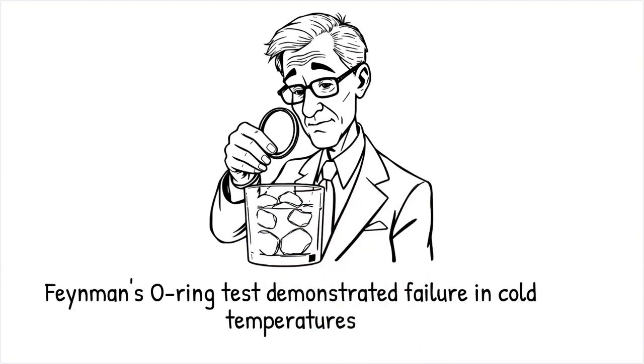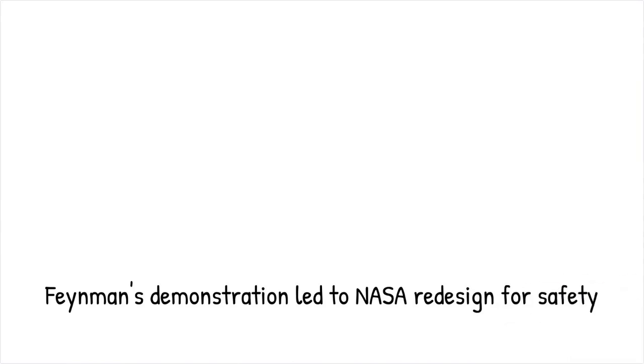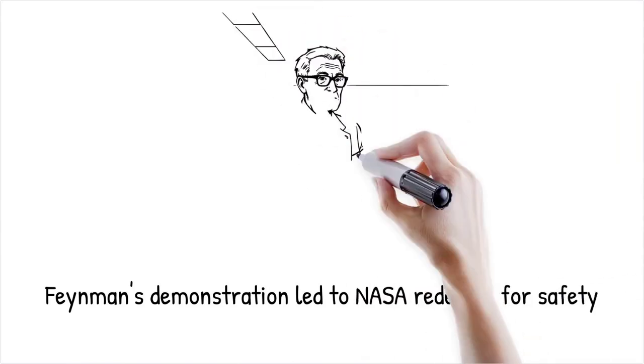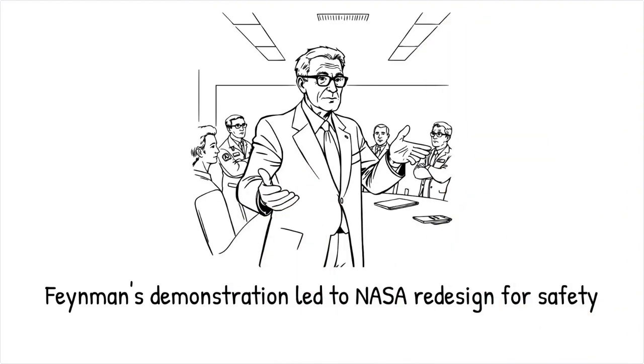His report criticized bureaucratic failures and risk miscalculations, emphasizing the importance of scientific integrity in engineering. His direct physical demonstration of O-ring failure led NASA to redesign shuttle components to improve safety. It's like testing a rubber band in a freezer to see if it snaps more easily, rather than relying on theoretical predictions.